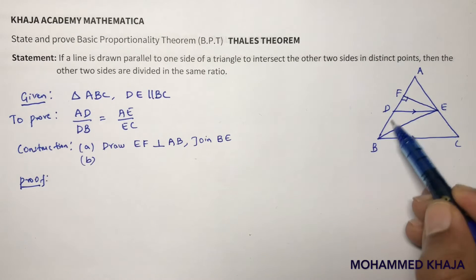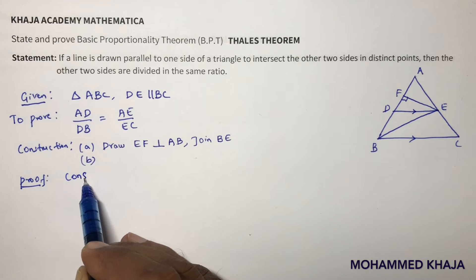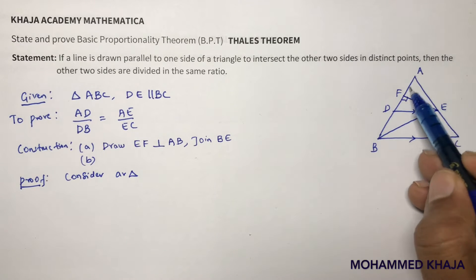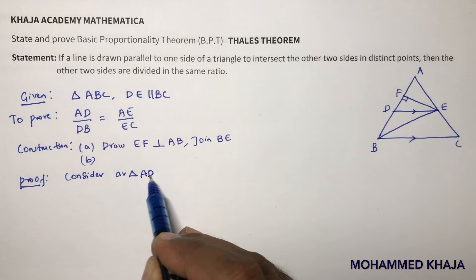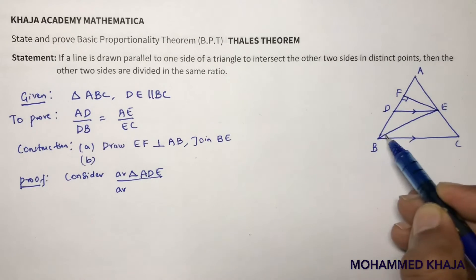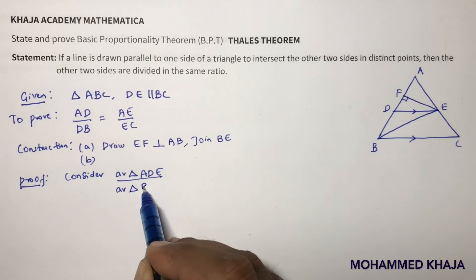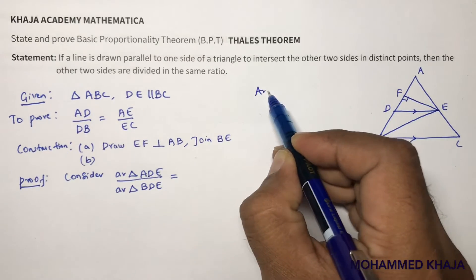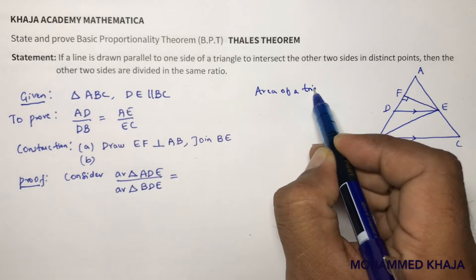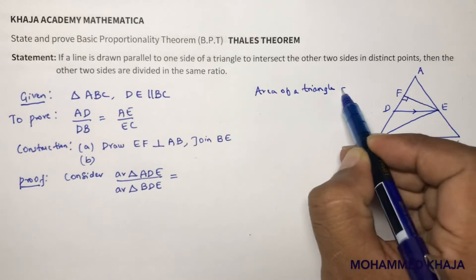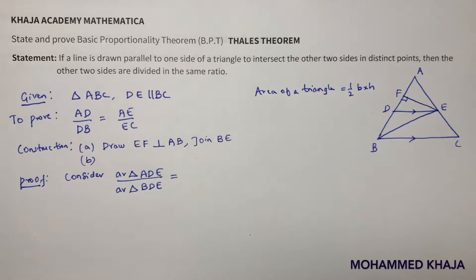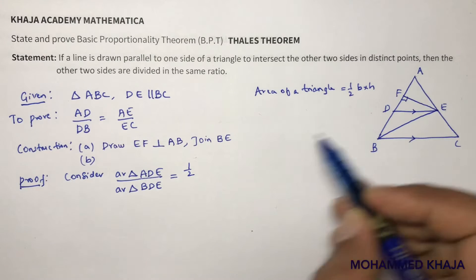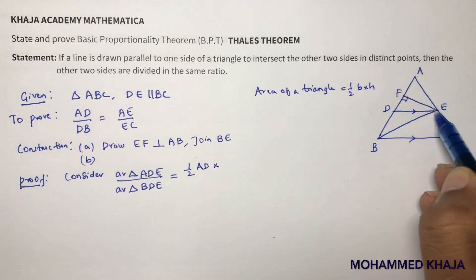For the proof, consider area of triangle ADE divided by area of triangle BDE. The formula for area of a triangle is half times base times height. For triangle ADE, the base is AD and the height is EF.